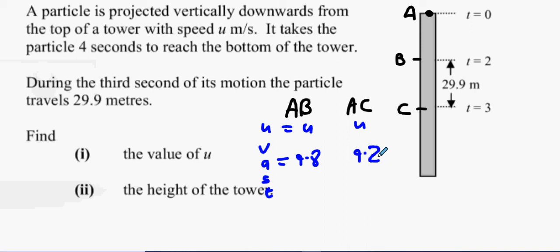It takes four seconds to reach the bottom of the tower, which is t equals 4. Your t value for A to B is 2, and your t value for A to C is 3.